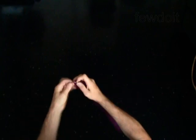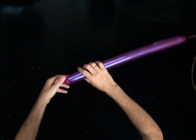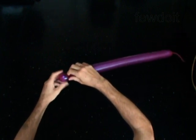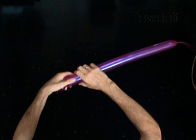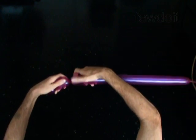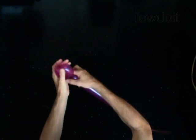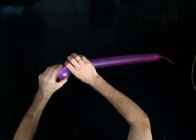Inflate a balloon leaving a 6-inch flat tail. Twist the first 1-inch bubble. Twist the second 2-inch bubble. Twist the third 2-inch bubble. Lock both ends of the chain of the last 2 bubbles in one lock twist.